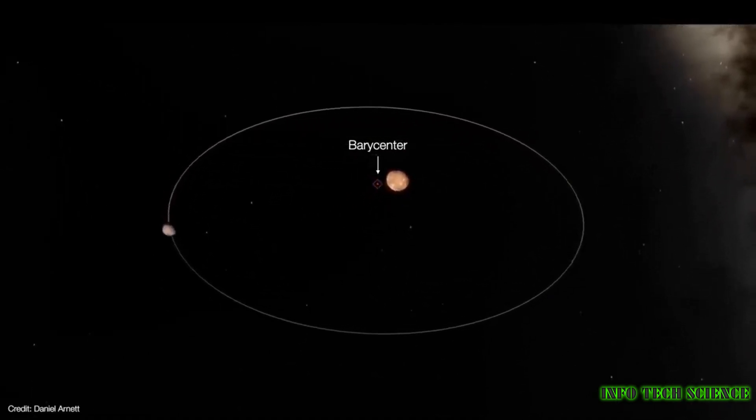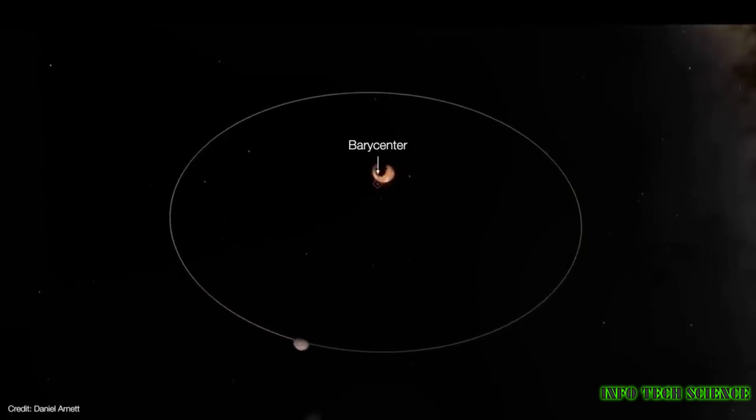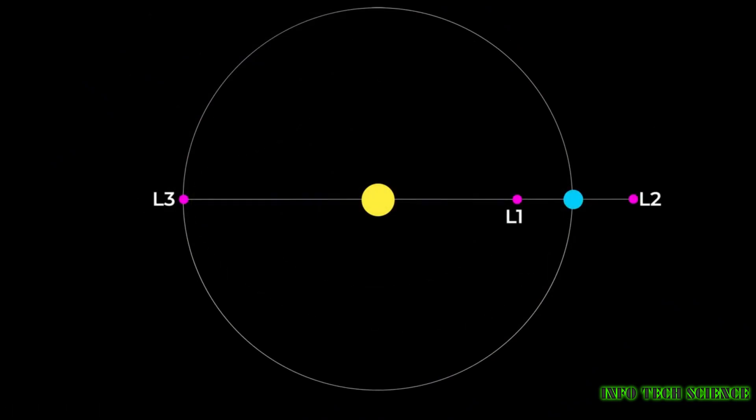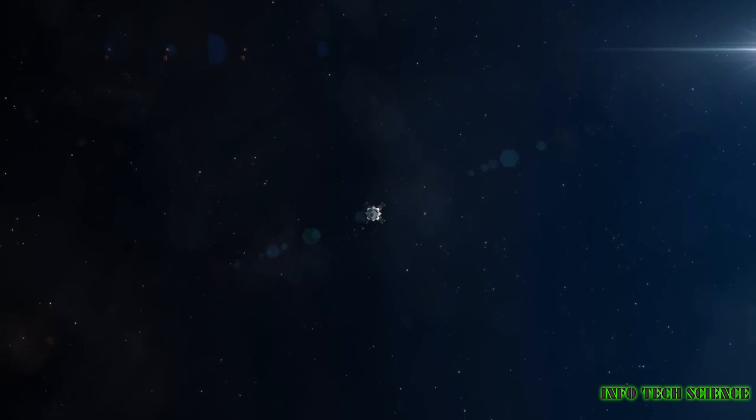This means that as Earth orbits the Sun, the JWST maintains a nearly constant position relative to our planet. It stays in line with Earth's shadow, allowing it to observe the same patch of the sky continuously.